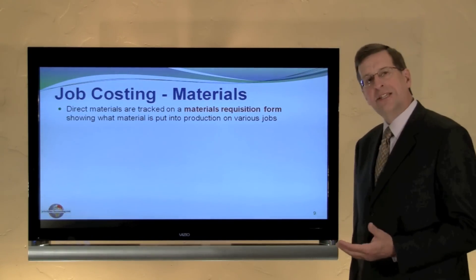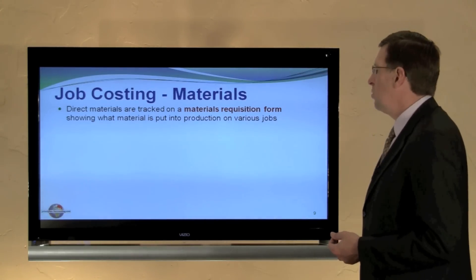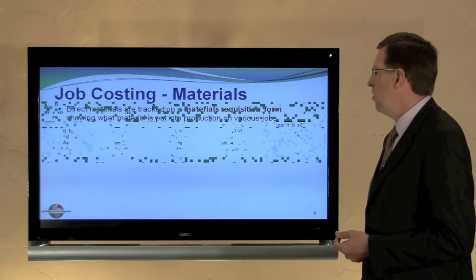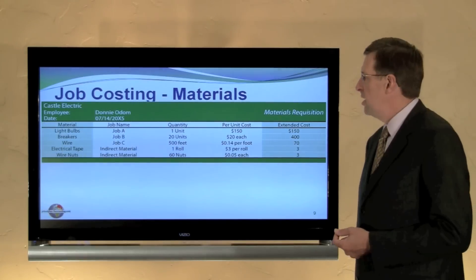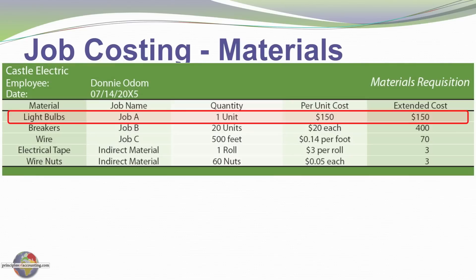We do a similar process for materials using a form called a material requisition form, which shows the material put into production. It lists the light bulb, breakers, wire, electrical tape, and so forth. We keep detailed track — for example, one light bulb used on Job A at $150. This is done for all materials used during the day.